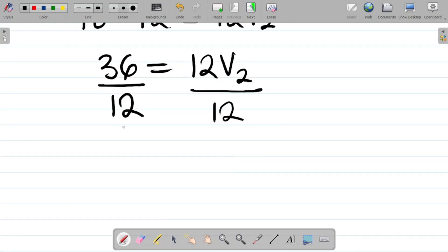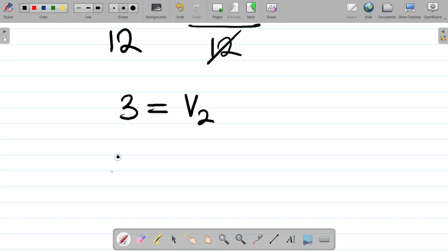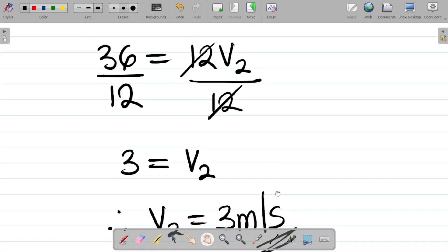So what's the value of v2? We'll have that 36 over 12 gives you 3, equals this cancels this, you have v2. So therefore we can say that v2 equals 3 meters per second. So this is the value of v2.